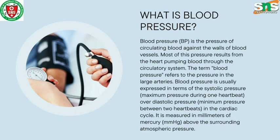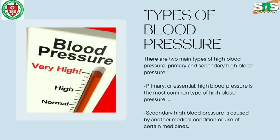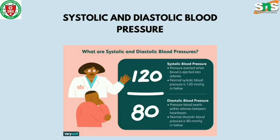This is measured in millimeters of mercury above the surrounding atmospheric pressure. There are two main types of high blood pressure: primary and secondary. Primary or essential high blood pressure is the most common type. Secondary high blood pressure is caused by another medical condition or use of certain medications.